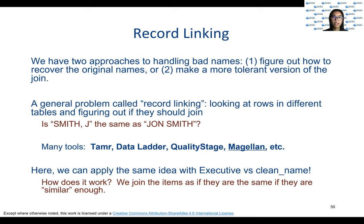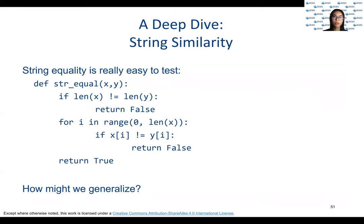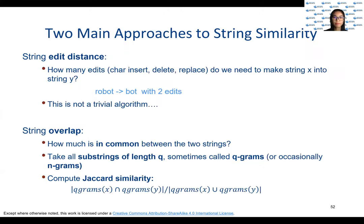There are many tools that can be used to do it, and some of them are listed here. This is the code for the simplest possible version of string equality. But we want to relax the not-equal condition to find similarity between the strings. So we will focus on string overlap because it is conceptually simpler and widely used. Here we take fragments of the strings and measure the percentage of fragments that are the same between the two strings.